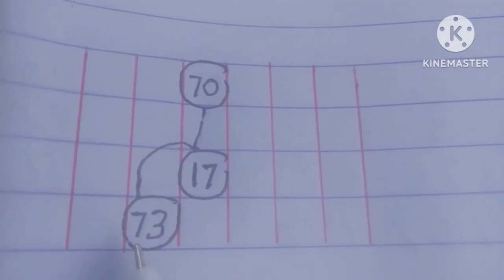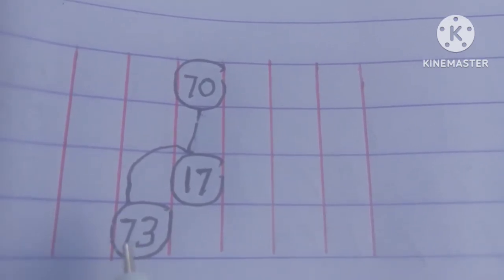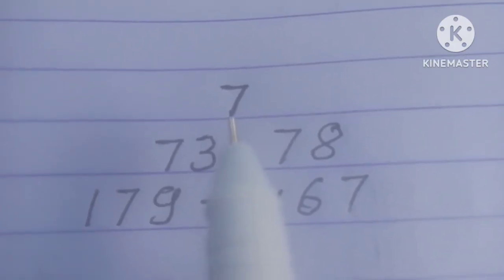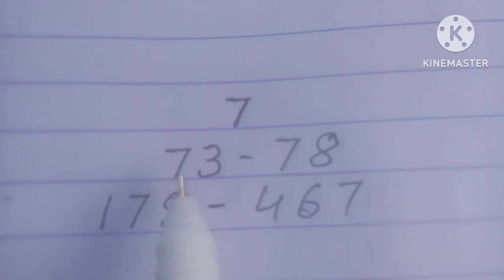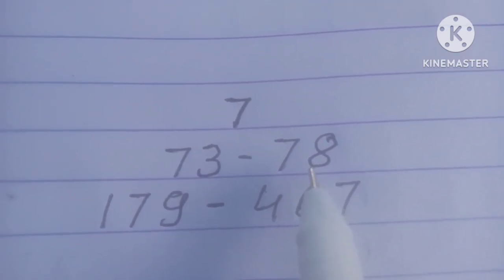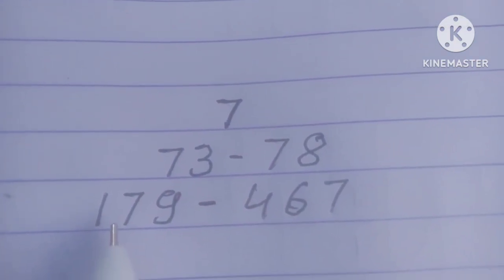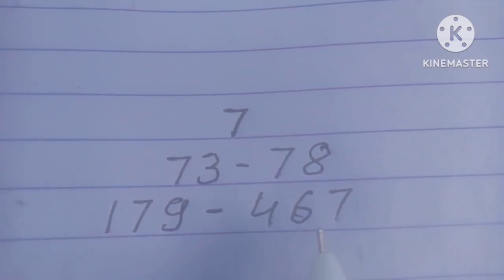First round should be 73. Single 7, 73, 78. Panel 179, 467.